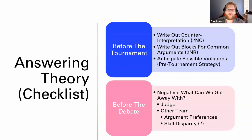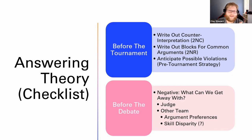Now let's think about answering theory. Before the tournament, do the same prep: write out counter interpretations and blocks for common arguments. One key technique if you're negative and answering affirmative theory is to make two arguments for every one argument they make. Theory arguments are almost entirely analytic — you're not reading large pieces of evidence. So if they say 'you shouldn't get to read a counter plan because it's uneducational,' you say one, it is educational because we test real-world thinking skills, and two, it's fair for a separate reason. That makes it very hard for the 1AR to answer all those arguments and still get to the substantive debate.